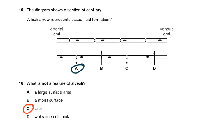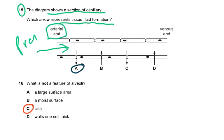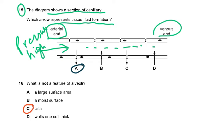Question 15: the diagram shows a section of a capillary — which arrow represents tissue fluid formation? The arterial end has very high pressure because all arteries arise from the aorta, which arises from the left ventricle with its thick wall. At the arterial end, high pressure forces fluid out to form tissue fluid — that is arrow A. Arrow C represents tissue fluid returning at the venous end, where pressure has greatly decreased.